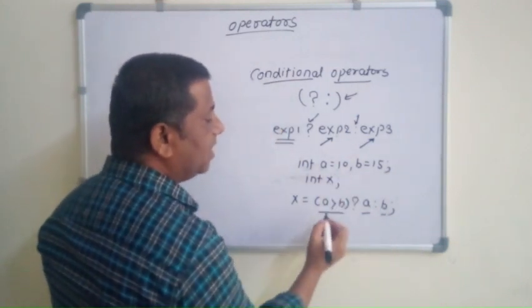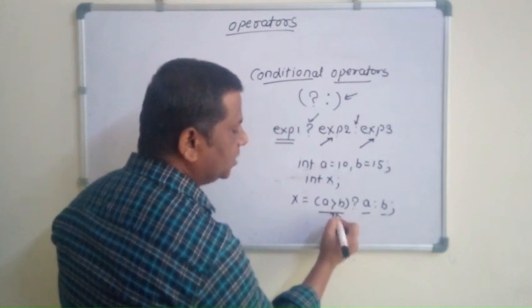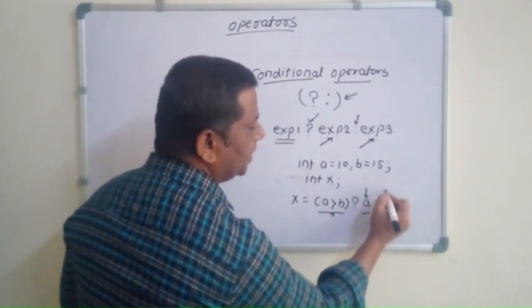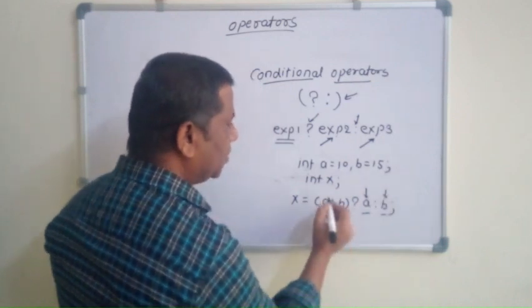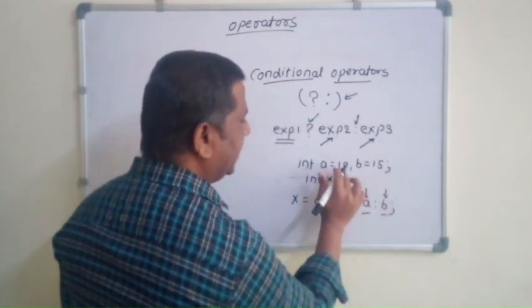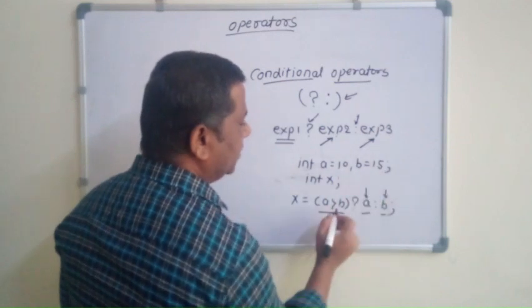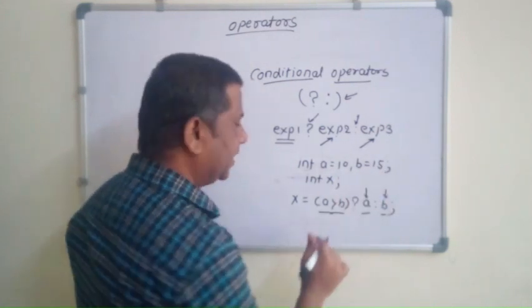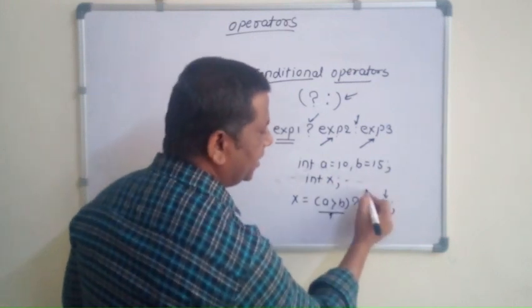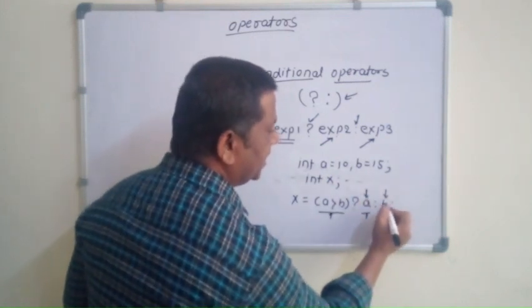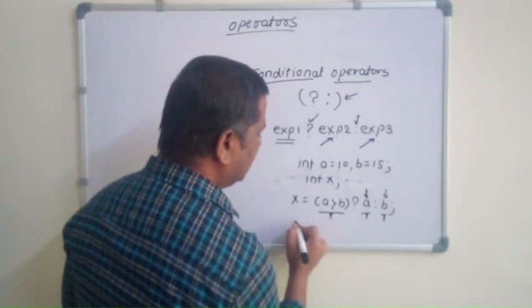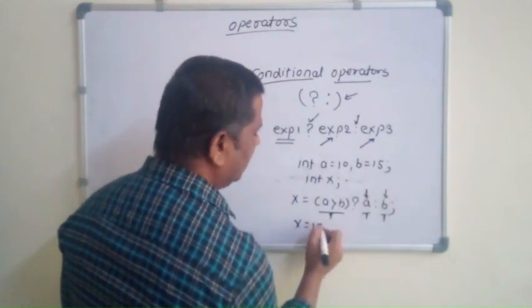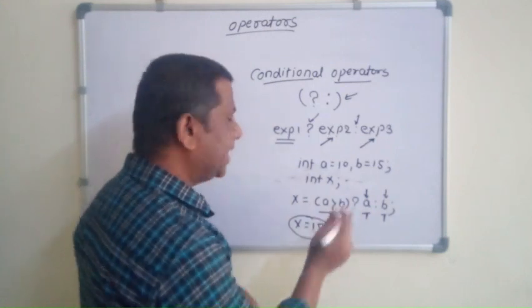So humain kya kaha tha? If this expression is true, then it will print this. Otherwise, it will print this. So a ki value kithne hai, 10 hai, and b ki value kithne hai, 15 hai. So yhe expression true nahi hota. So that's why it will not execute this expression, then it will print directly b. Means, x ki value kya hooghi, b ki value hooghi, that is 15.